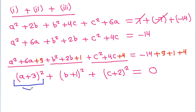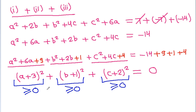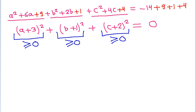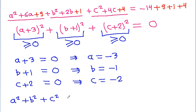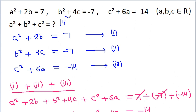Since (a plus 3) whole square is greater than or equal to 0, and (b plus 1) whole square is greater than or equal to 0, and (c plus 2) whole square is greater than or equal to 0, and their sum equals 0, each term must be zero. So a plus 3 equals 0, giving a equals minus 3; b plus 1 equals 0, giving b equals minus 1; c plus 2 equals 0, giving c equals minus 2. Therefore, a squared plus b squared plus c squared equals 9 plus 1 plus 4, which is 14.